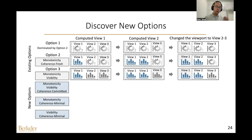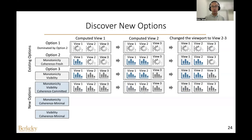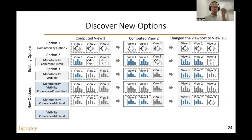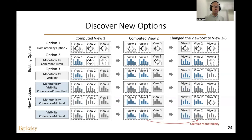We have discovered three new options not in existing tools. First, the combination involving coherence-committed always reads old results until the new ones are committed. Second, monotonicity plus coherence-minimal reads old results until the new ones in the viewport are computed, but after modifying the viewport to read views 2 and 3, it chooses old results to maintain monotonicity. Third, visibility plus coherence-minimal sacrifices monotonicity to maintain visibility — after modifying the viewport, it chooses to read the old results.